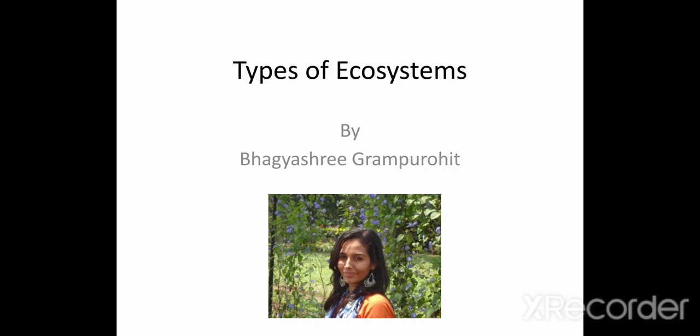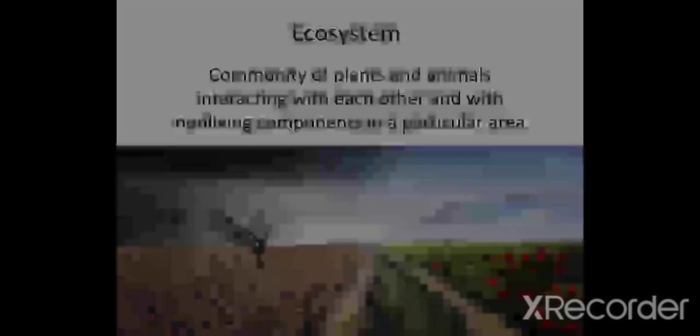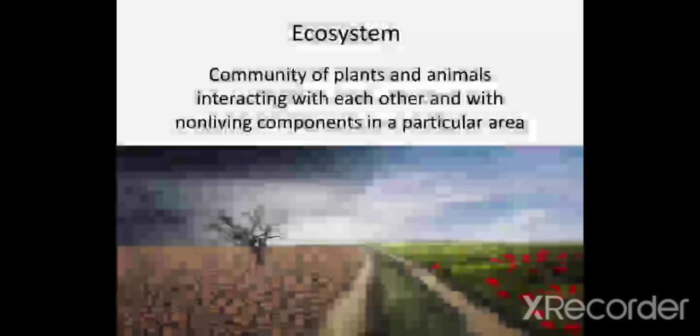Welcome to my YouTube channel. We are going to see types of ecosystem in this video. We have already learned what is ecosystem. Ecosystem is a community of plants and animals interacting with each other in a particular area as well as with their non-living environment.